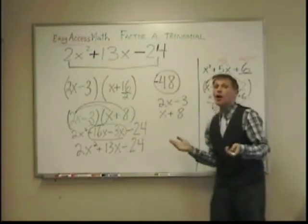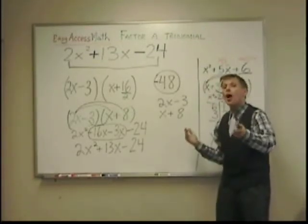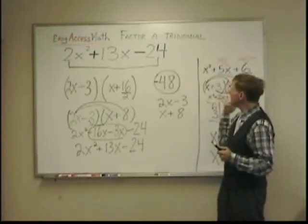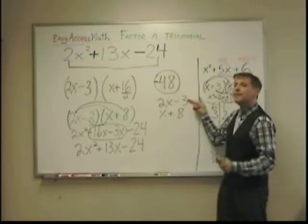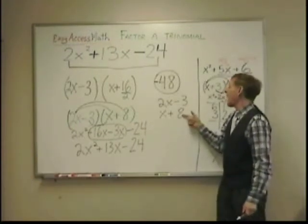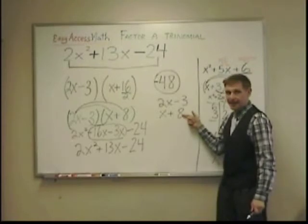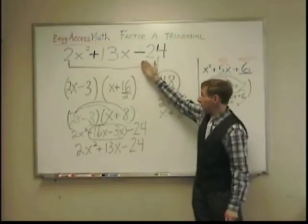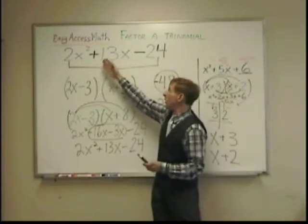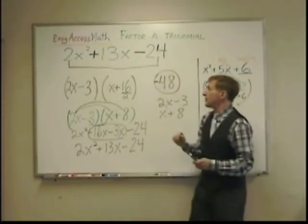Remember, there could be a time that you're only asked for one of the factors. And in that case, either one of these would be the right answer. 2x minus 3 and x plus 8. Those are the two factors that come out of, uh, 2x squared plus 13x minus 24. When I FOIL them back, I get that trinomial as the result. That's the check.